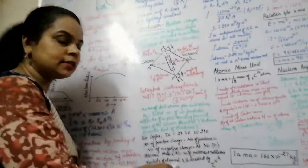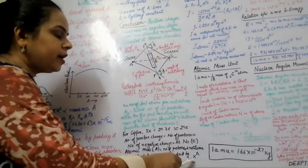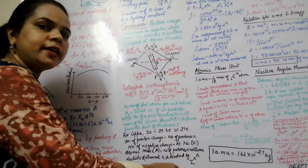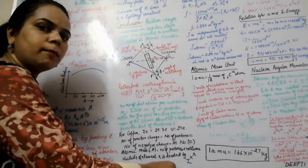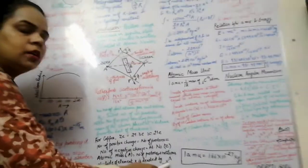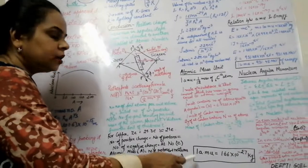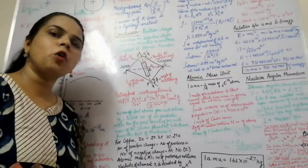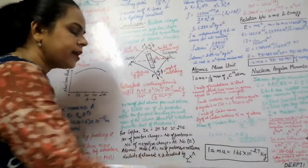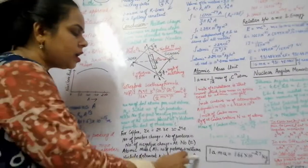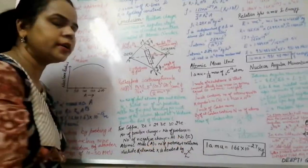If we want to represent a nuclide of element X, it is denoted as ᴬ_Z X, where Z corresponds to the atomic number, X is the symbol of the element, and A is the atomic mass number — which is nothing but the number of protons plus the number of neutrons.